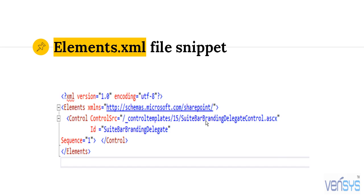In the elements.xml file, you need to map the control like this. For 'ControlSrc', you provide the source of the deployed location. Then you provide the ID — the actual ID which is available in our SharePoint master page. And then the Sequence.